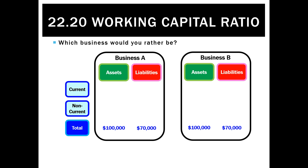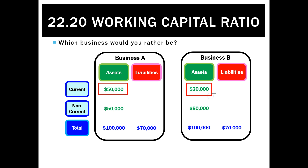It's actually impossible to tell — we need to know more. So if we take the current assets of business A, they've got $50,000 and non-current assets of $50,000. That compares to business B, which has $20,000 and $80,000 of current and non-current respectively. You might say you'd rather be business A with two and a half times the current assets of business B, but liquidity is not about what you've got — it's about can you pay what is due in the short term?